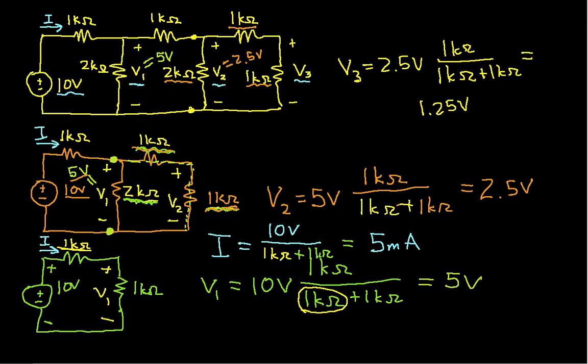So we have the current the source has to supply, and we know all the voltages internal to the circuit — and we did it all without having to use nodal analysis. We did this by just using equivalent resistances and then a voltage divider. Hopefully this was informative, and thanks for watching.